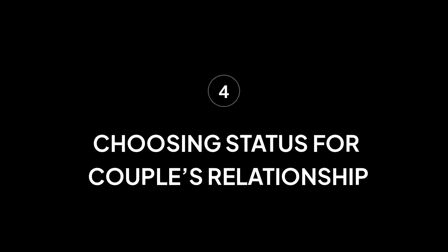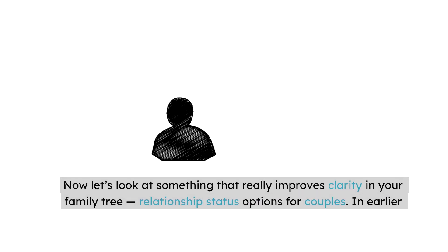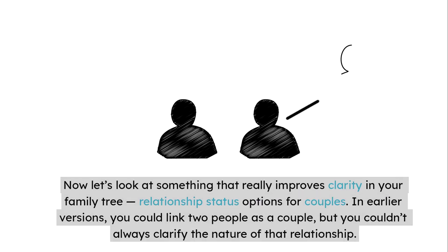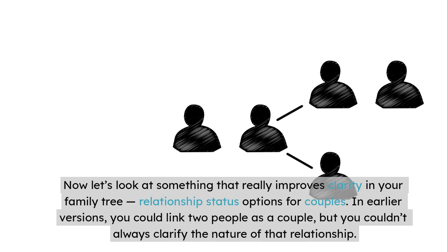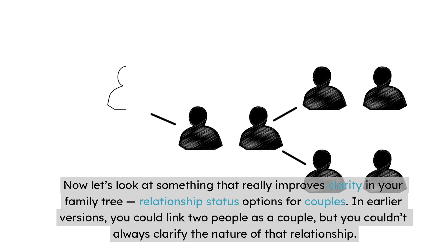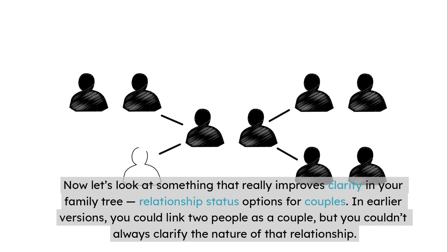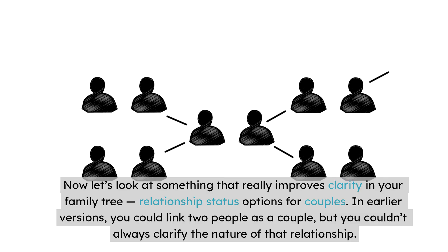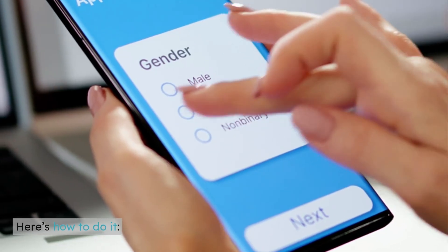Tip 4: Choosing a Status for a Couple's Relationship. This really improves clarity in your family tree. In earlier versions, you could link two people as a couple, but you couldn't always clarify the nature of that relationship. In FTM 2024, you can now specify a relationship status.